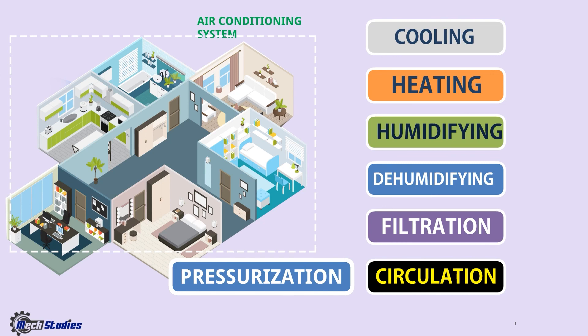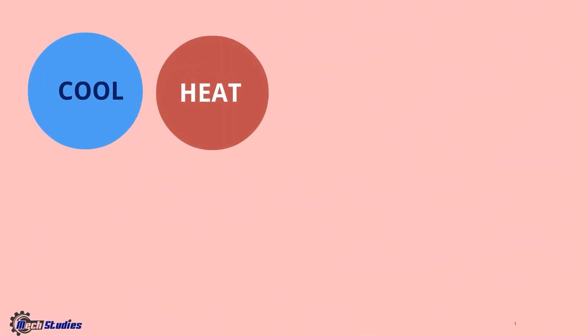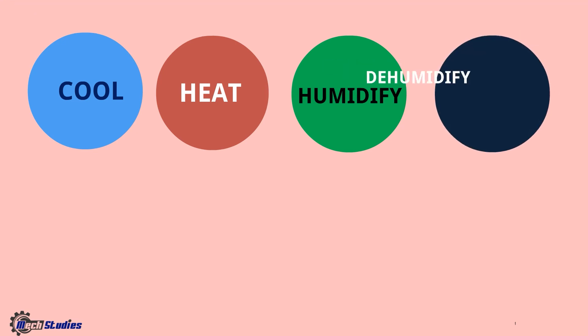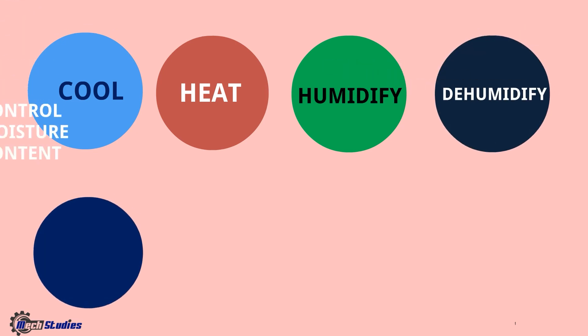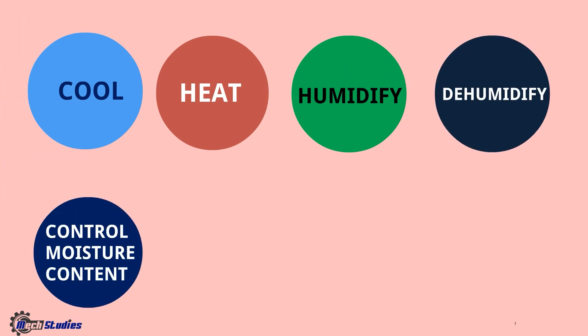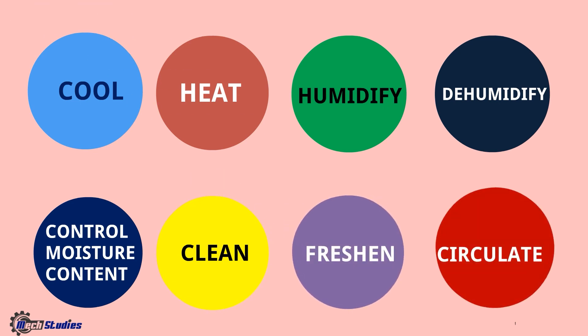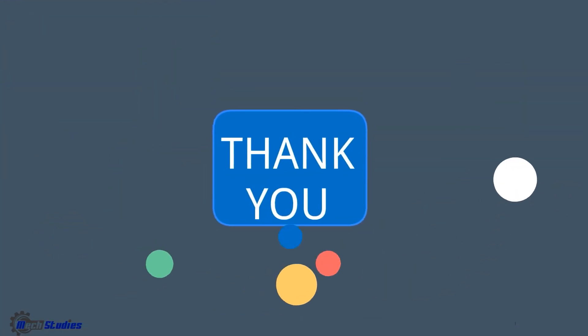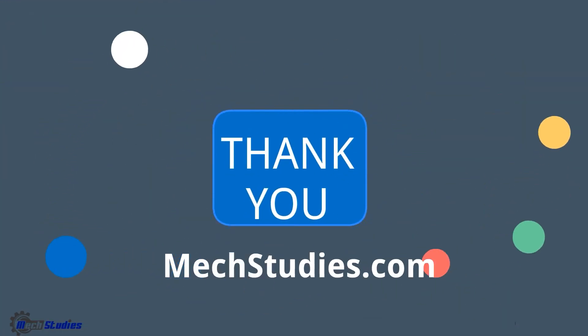So we can do a lot of things with an HVAC system - like cooling, heating, humidifying, dehumidifying, controlling moisture content, cleaning, freshening, and circulation of air. There are various HVAC equipment which can do all or a combination of these things. Thank you so much - please visit mechstudies.com.